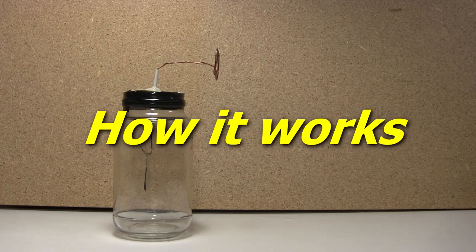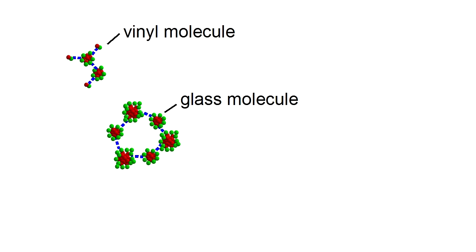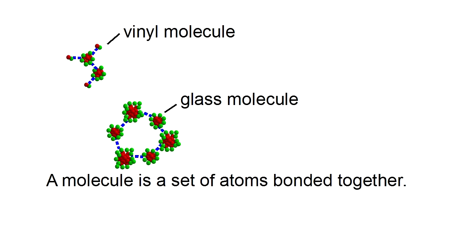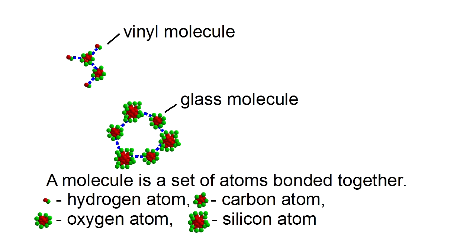So how does it work? Let's use our vinyl and glass example. We'll go right down to the individual molecule level. The molecule is simply a collection of atoms bonded together. Vinyl is made up of hydrogen and carbon atoms, and glass is made up of oxygen and silicon atoms. Though it's not too important to know which atoms are involved.